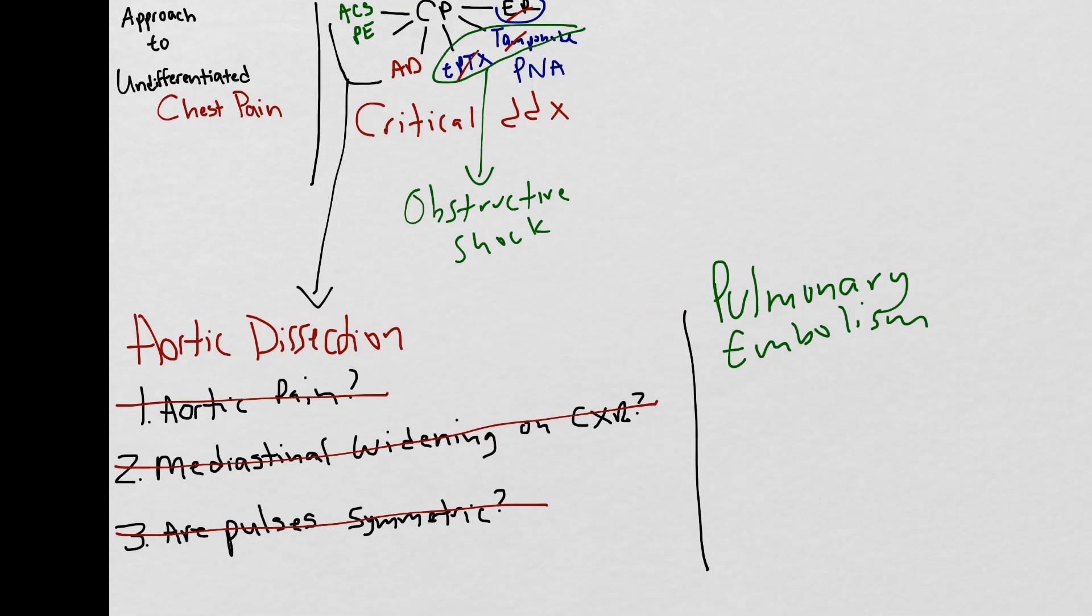The next disease process in our differential is pulmonary embolism. In patients under 50 years of age, we use the PERC criteria, or the pulmonary embolism rule-out criteria. We can use the PERC criteria in low-risk patients for which the diagnosis of PE is suspected but unlikely, and we can definitively rule out PE using vitals, history, and exam.